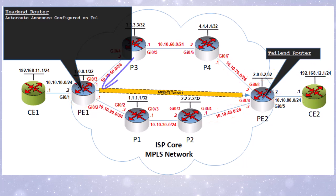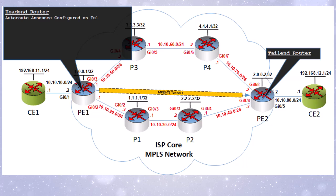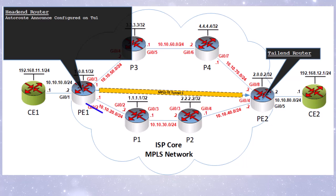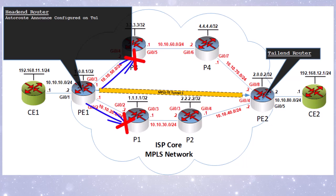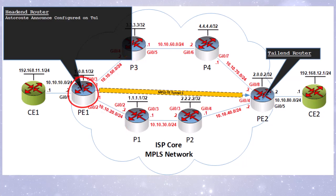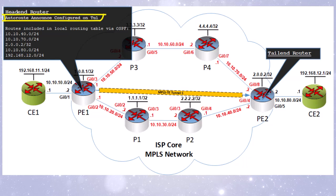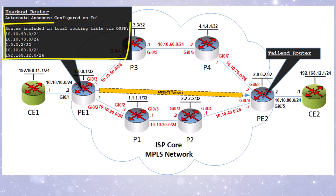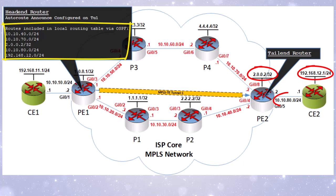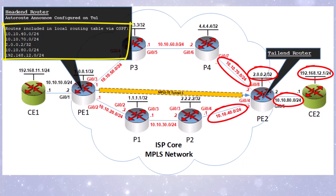The result is that any network found behind the tail end router of the specific tunnel will be added to the routing table of the head end router, with a next hop via the tunnel itself. These routes, when installed in the head end router, are still considered OSPF routes, but they're not advertised to other routers like P1 or P3 — they remain local to the head end router. With auto route announce configured on tunnel 1 on P1, you will see the addition of these routes in the routing table as OSPF routes, because these routes are behind the tail end router.